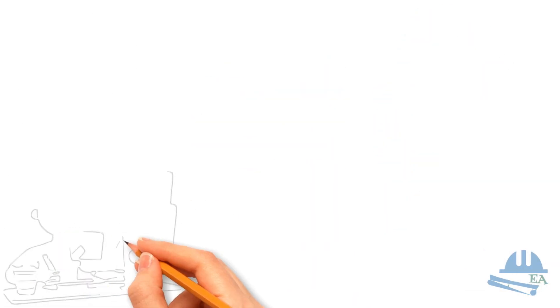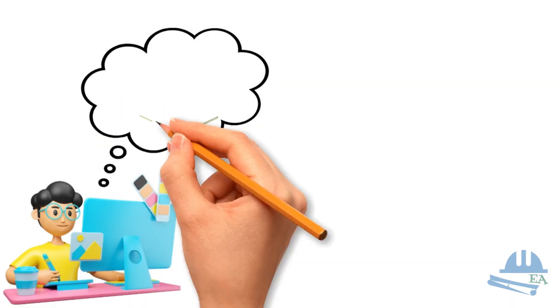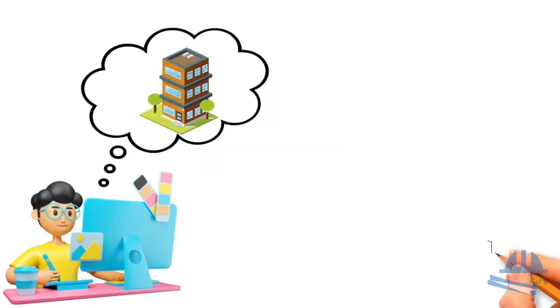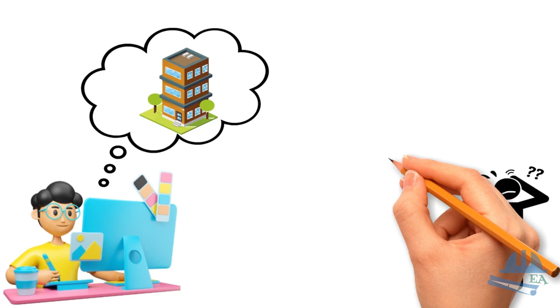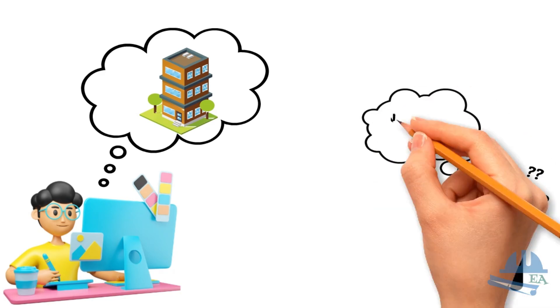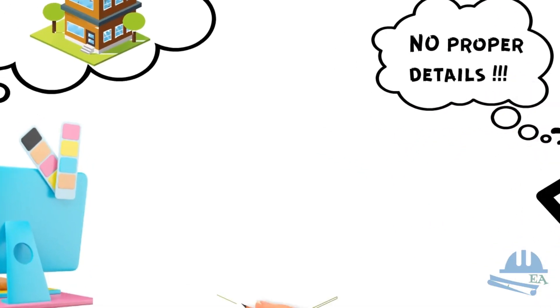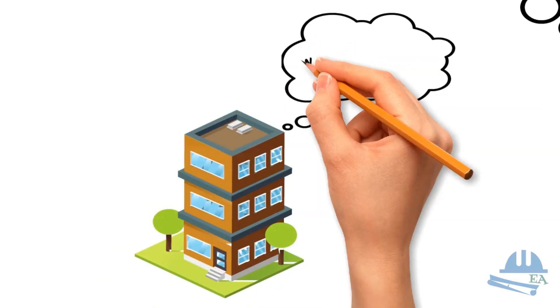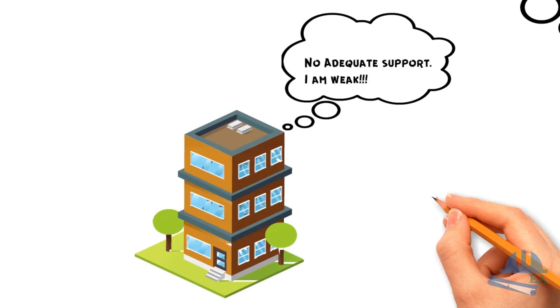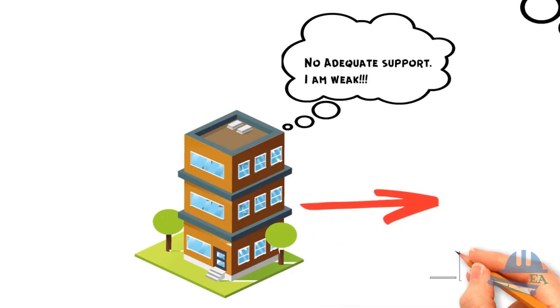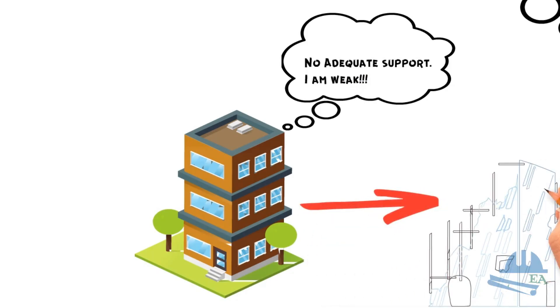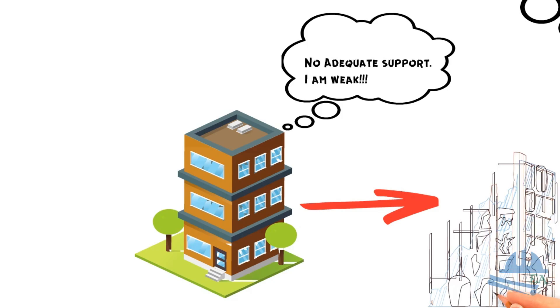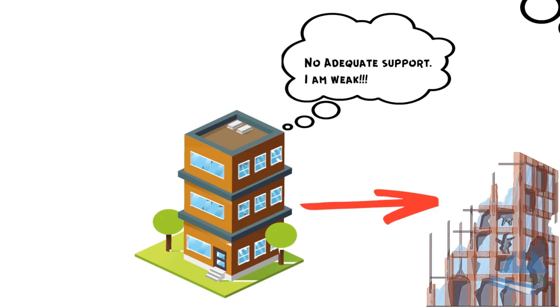Imagine you are designing a concrete slab for a multi-storey building and you don't specify the correct spacing and anchorage length for the reinforcement bars. What happens? The reinforcement might not provide adequate support, leading to weaknesses in critical areas. This can cause excessive cracking or even failure under load. So, proper detailing is really important.